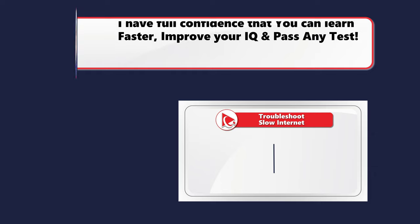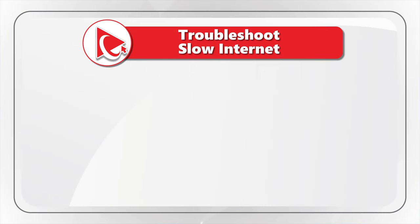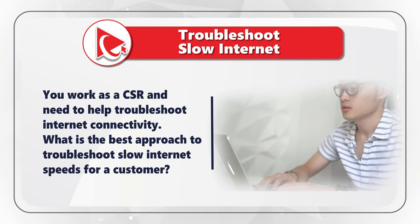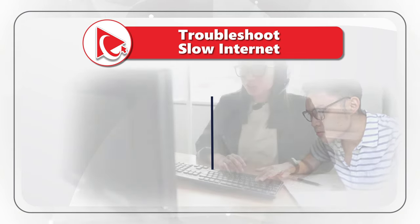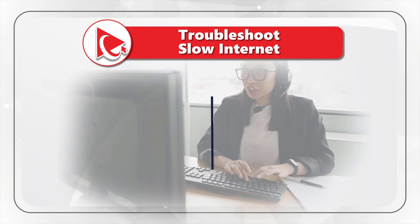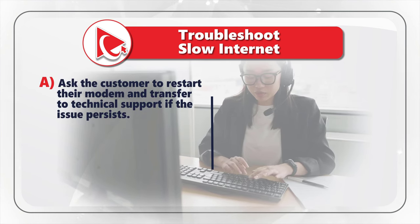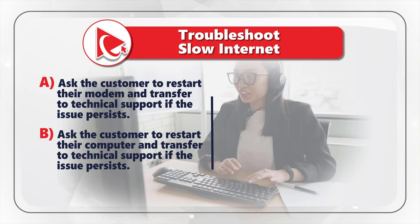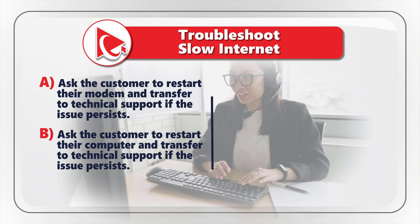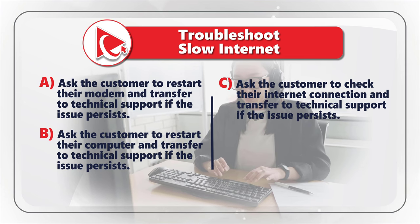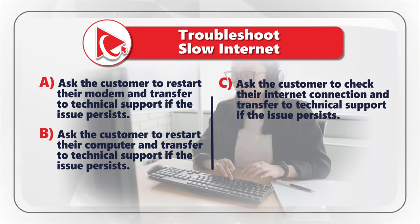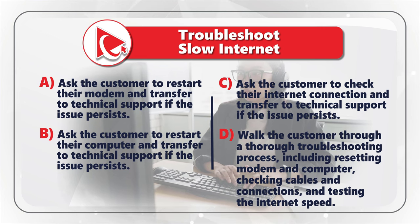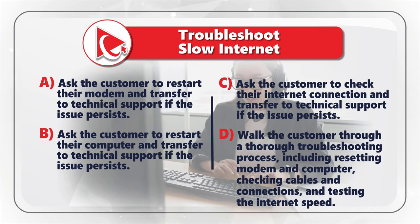Companies frequently look at your customer service skills on the test. You work as a CSR and need to help troubleshoot internet connectivity. What is the best approach to troubleshoot slow internet speeds for a customer? Choice A: ask the customer to restart their modem and transfer to technical support if issue persists. Choice B: ask the customer to restart their computer and transfer to technical support if issue persists. Choice C: ask the customer to check their internet connection and transfer to technical support if issue persists. Choice D: walk the customer through a thorough troubleshooting process, including resetting the modem and computer, checking cables and connections, and testing the internet speeds.